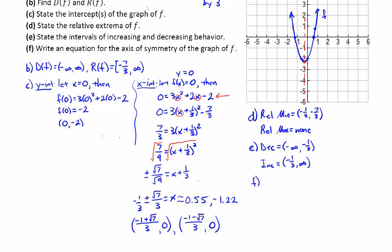And then finally, for part F, write an equation for the axis of symmetry. The axis of symmetry will be located at x equals negative 1/3.